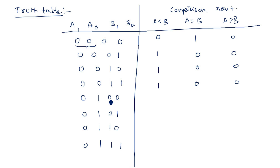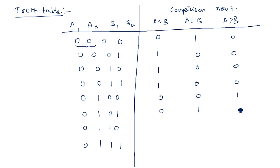For row 3 (A=1, B=0): A is 1 and B is 0, so A is greater than B — A greater than B should be 1 and the remaining two outputs are zeros. For row 4 (A=1, B=1): both are equal. For row 5 (A=1, B=2): A is 1, B is 2, so A less than B. For row 6 (A=1, B=3): A is 1, B is 3, so A less than B.